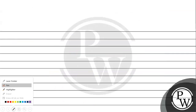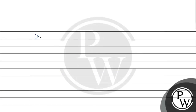Ab agar hum dekhte hain Methane ka combustion — suppose we have Methane, and we do its combustion with oxygen. We get carbon dioxide and water molecules. The enthalpy for this reaction is minus 890.3 kJ/mol.